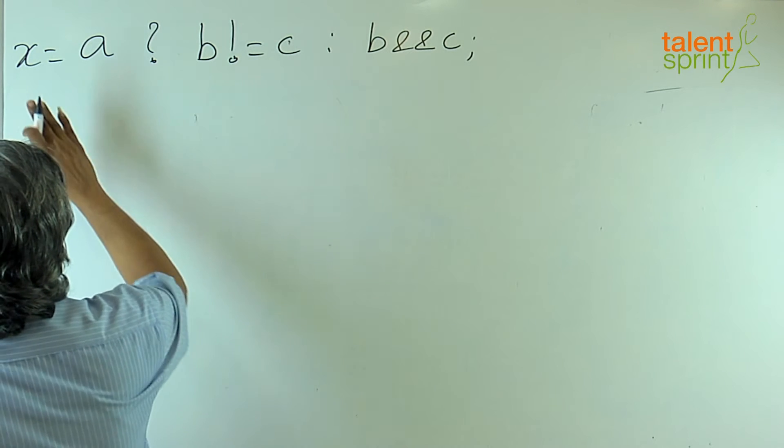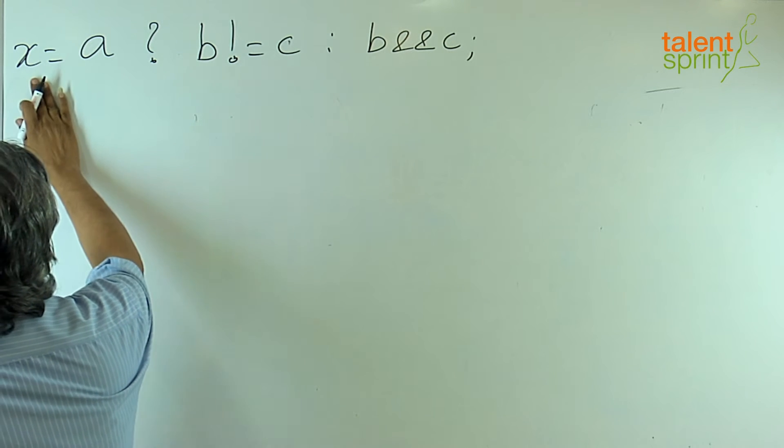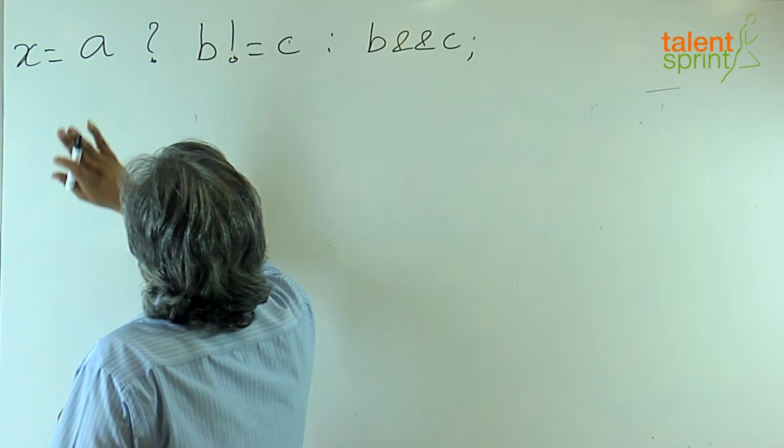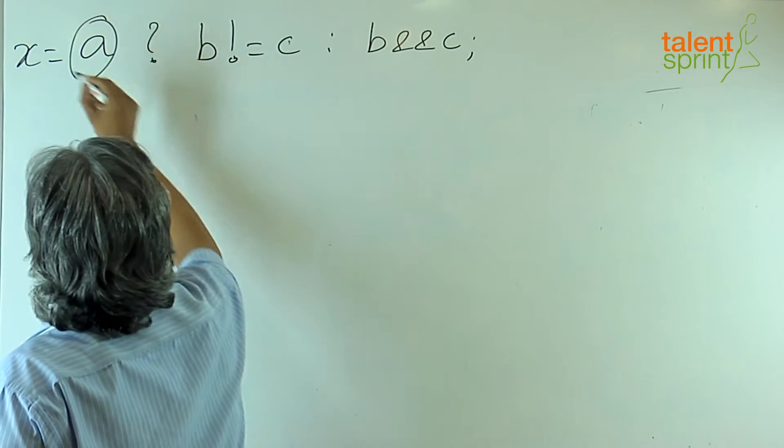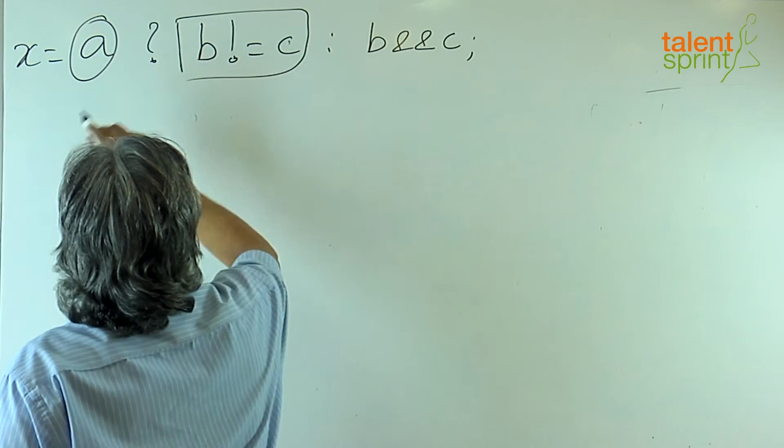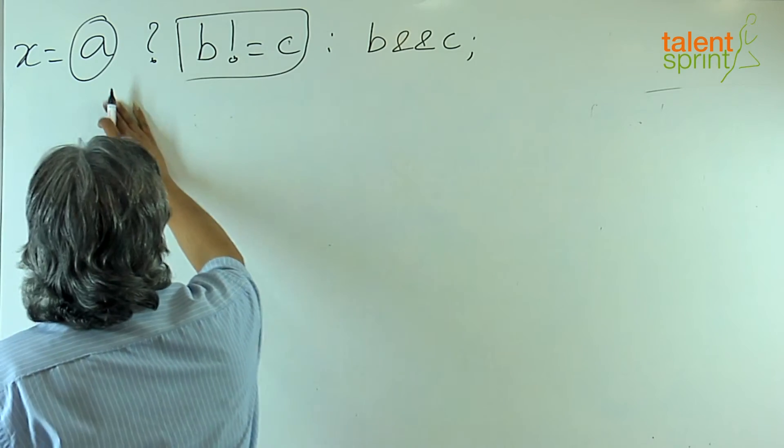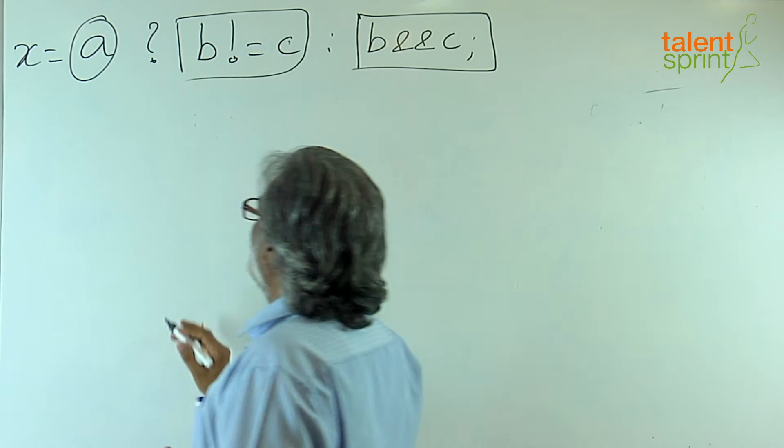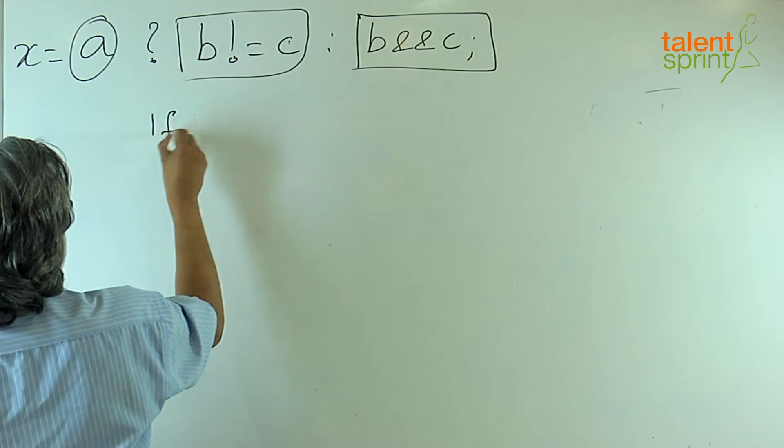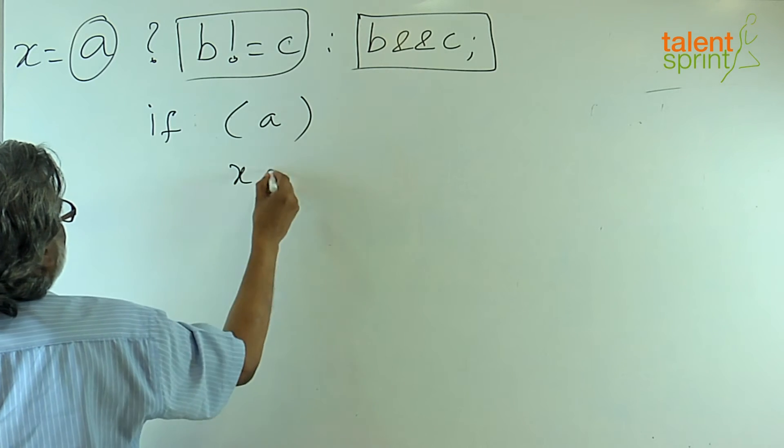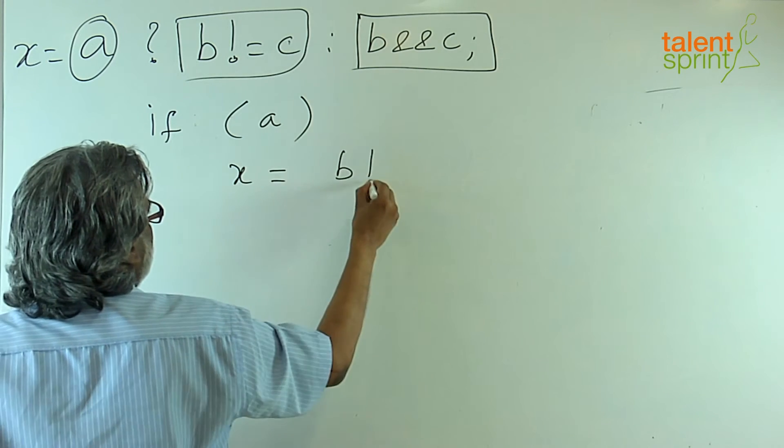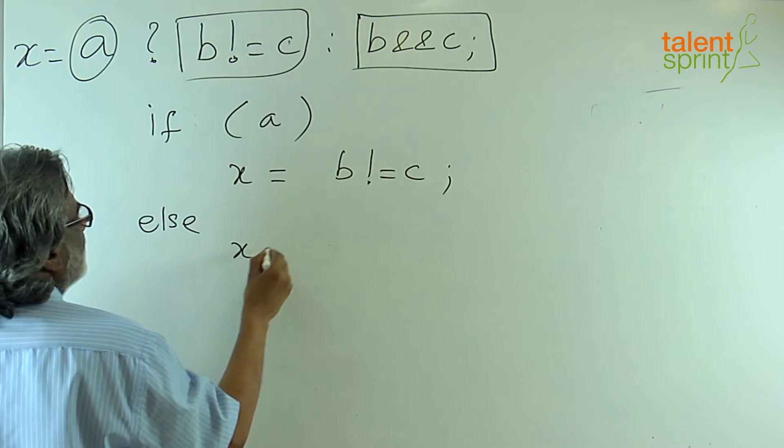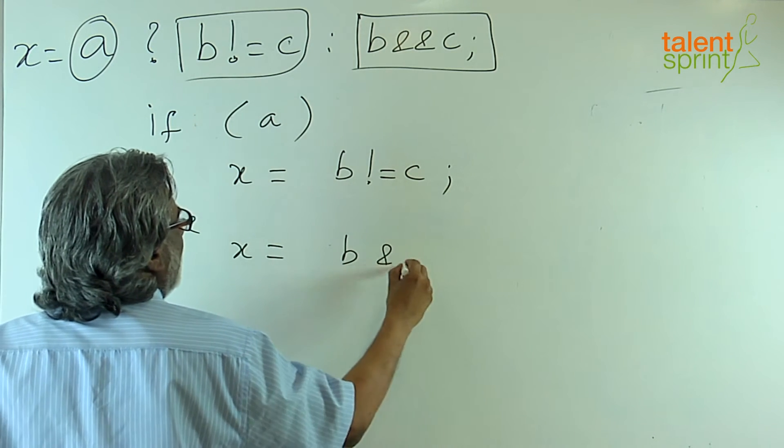Let us first try to understand what we are talking about. x is assigned the result of this ternary operator. Now, we know the ternary operator has a condition, an expression which is used if the condition is true and another condition which is used if the expression is false. So, we can rewrite it as if A, x is equal to B not equal to C, else x is equal to B and C.